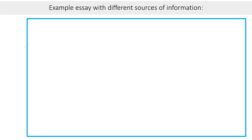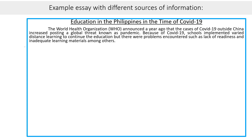Here is an example essay with different sources of information. The title is 'Education in the Philippines in the Time of COVID-19.' The introduction states: The World Health Organization announced that cases of COVID-19 outside China increased, posting a global threat known as a pandemic. Because of COVID-19, schools implemented varied distance learning to continue education, but problems were encountered such as lack of readiness and inadequate learning materials. The first sentence provides background, and the second sentence presents the main idea.